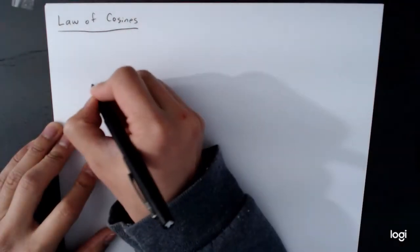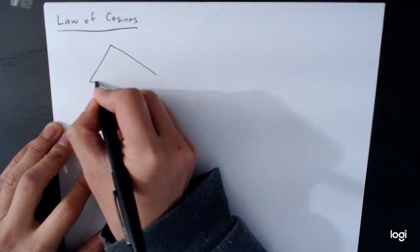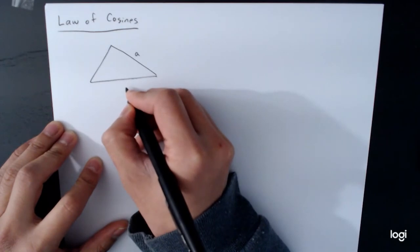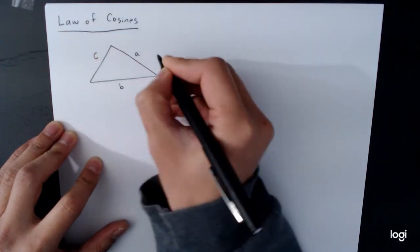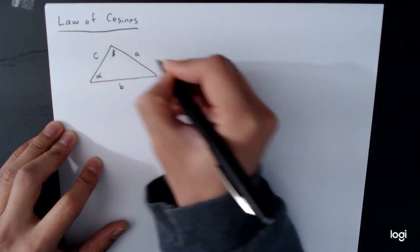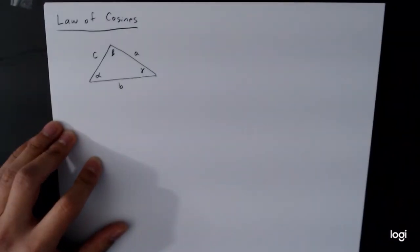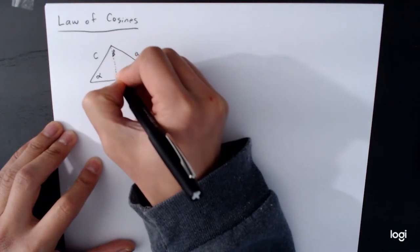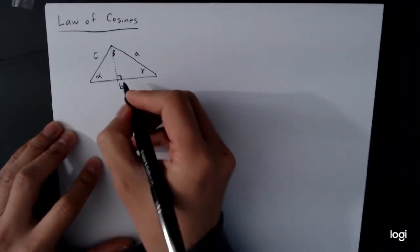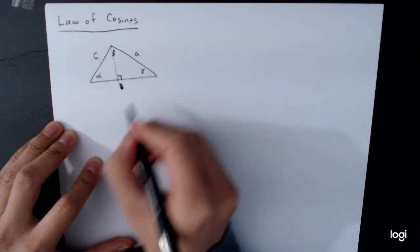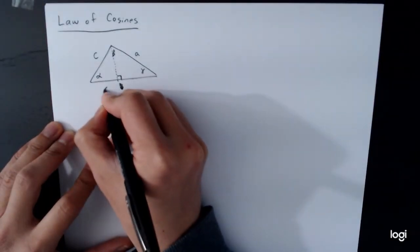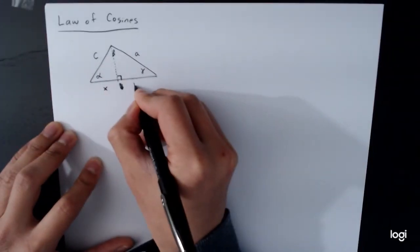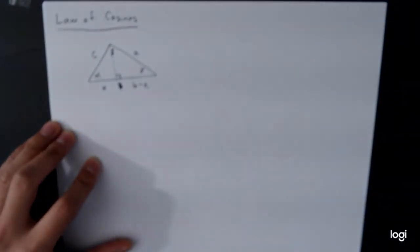For the law of cosines, we're going to begin with the same sort of picture as before — an oblique triangle where we label the sides and angles. The sides are labeled a, b, c and the corresponding angles alpha, beta, and gamma. But this time we're going to set ourselves up differently. We're going to break the side of length b into two pieces: one of length x and one of length b minus x, so the whole length is still b.